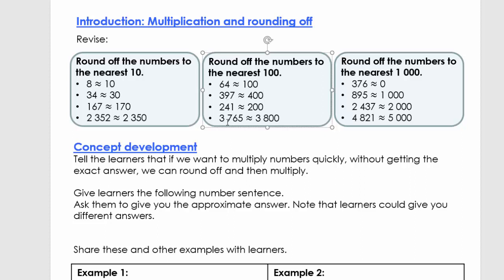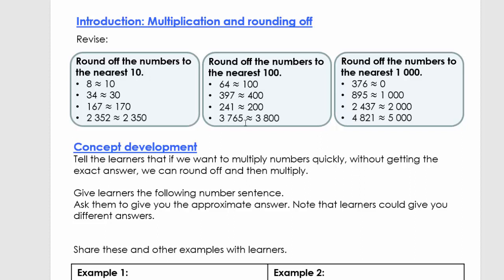For 3,765, we look at the 100s place and the 10s place. 765 is between 700 and 800. We use the 10s digit — the 6 — to help us round off. Since 760 is closer to 800 because of the 6, it goes to 800. So 3,765 rounded off to the nearest 100 is 3,800. Pause here and explain all of these to somebody.